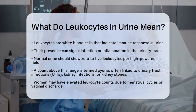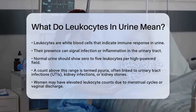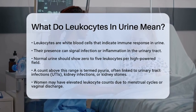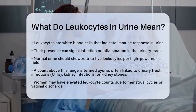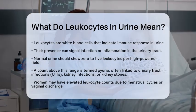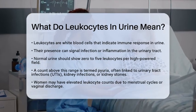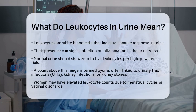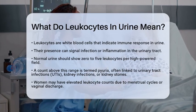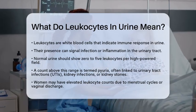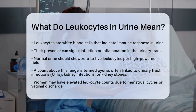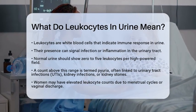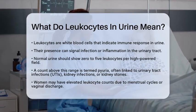In a healthy individual, you would typically find 0-5 leukocytes per high-powered field in urine. If the count exceeds this range, it is known as pyuria. This condition often suggests issues such as urinary tract infections, kidney infections, or even kidney stones. In women, slightly elevated counts may occur due to menstrual cycles or vaginal discharge, making careful sample collection essential to avoid contamination.